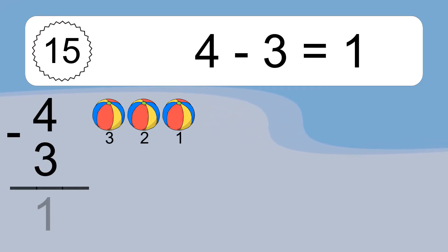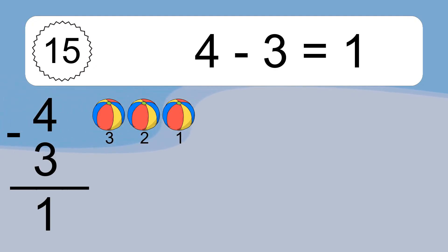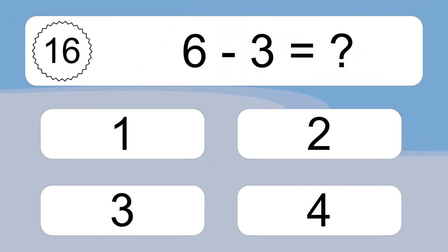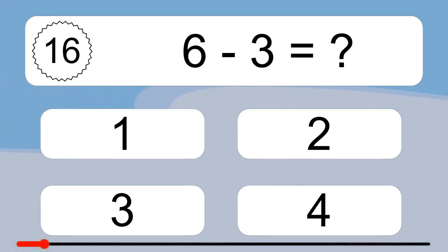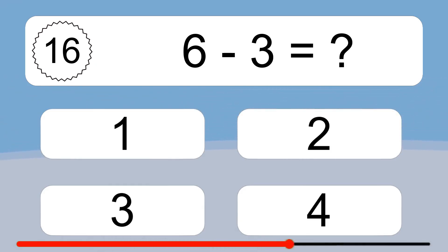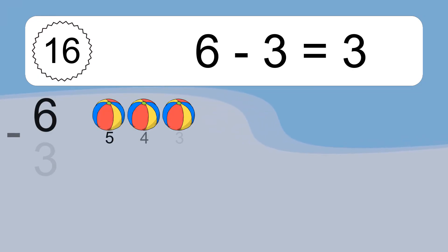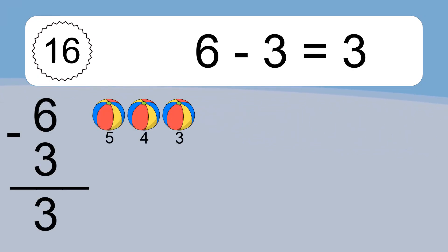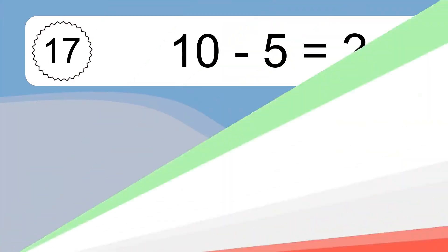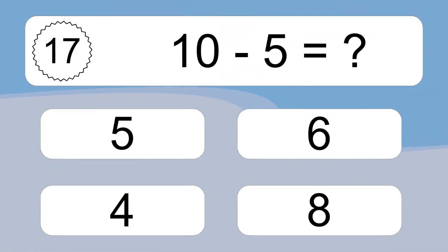Four minus three equals one. Let's count it: three, two, one. Six minus three equals what? Six minus three equals three. Let's count it: five, four, three.